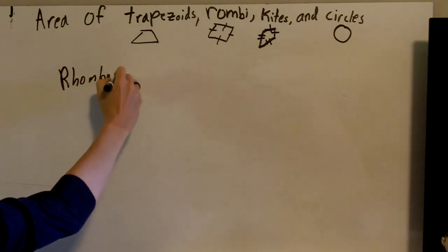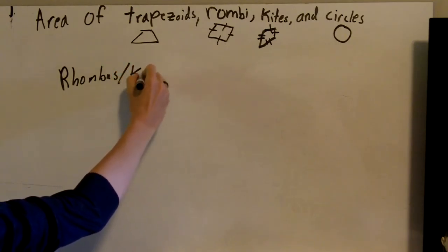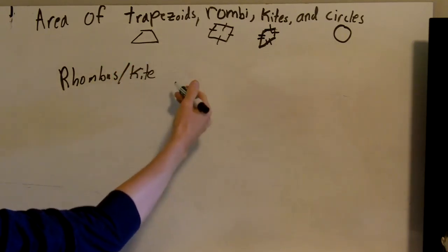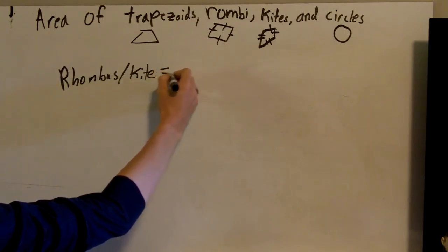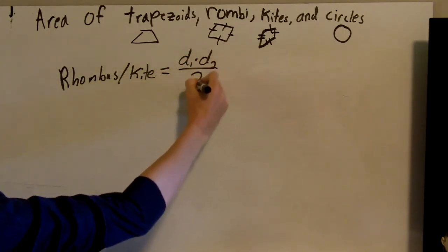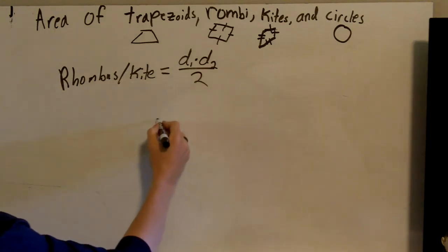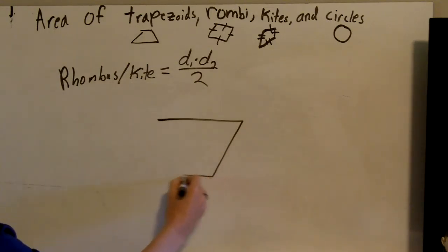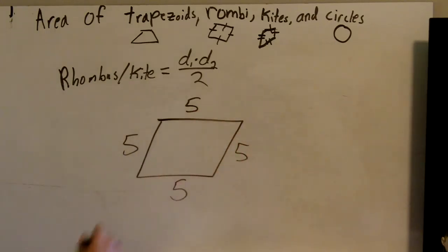I'm going to write rhombus and kite up here. They would do them the exact same way. So we do diagonal one times diagonal two divided by two. So here is my rhombus. Now I could give you side lengths, but I don't need those. Those are not useful to me. So there, it's a rhombus.